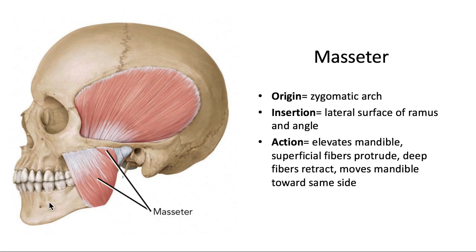I always think of a muscle like a rope — the origin is where a person standing still pulls the rope toward them, and the insertion is what's on the other end getting pulled. So the origin is immobile and the insertion is mobile. The masseter's action is to elevate or close the mandible, which makes perfect sense because the primary direction of those fibers runs up toward the zygomatic arch. Secondarily, the superficial fibers can protrude the mandible forward, while the deep fibers can retract or retrude the mandible after it's been protruded.